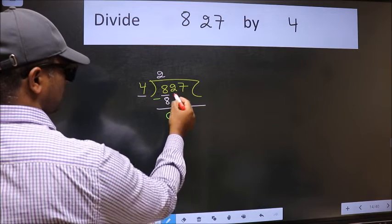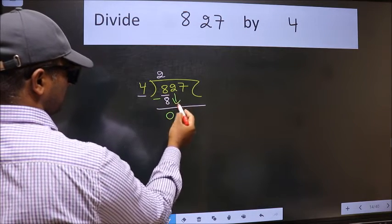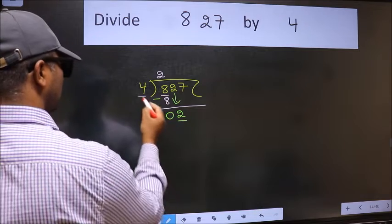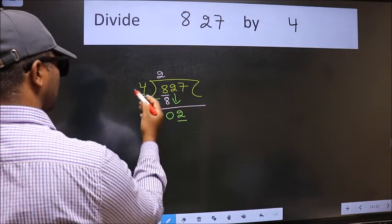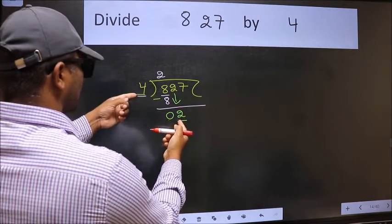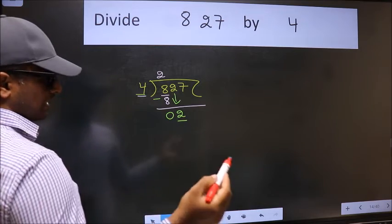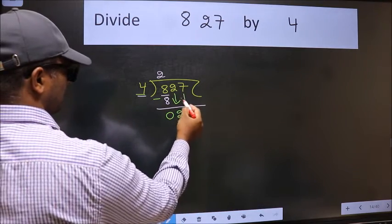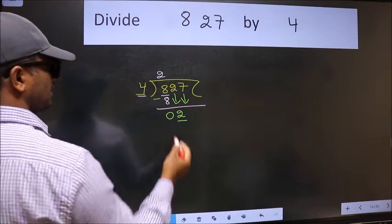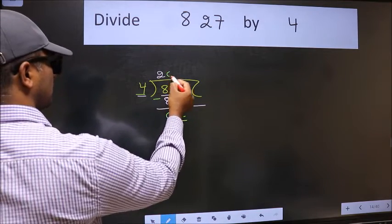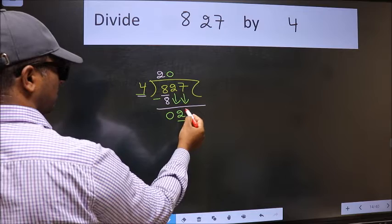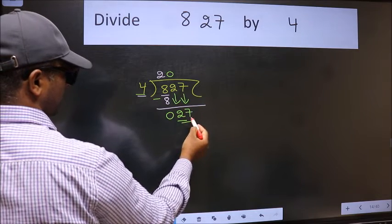After this, bring down the beside number. So, 2 comes down. Now here we have 2 and here 4. 2 is smaller than 4, so we should bring down the second number. The rule to bring down the second number is we should put 0 here. Then only we can bring this number down.